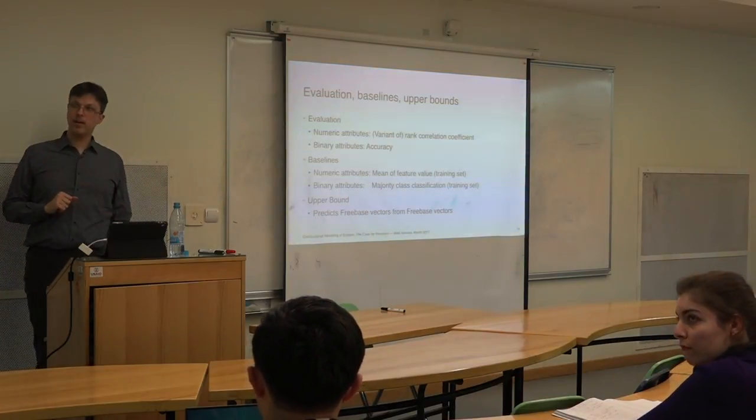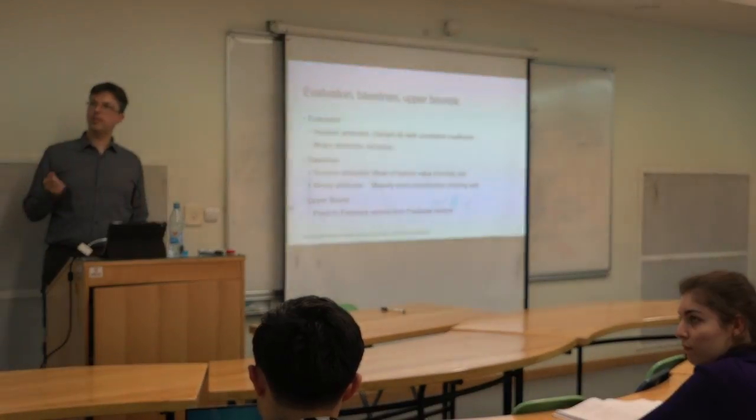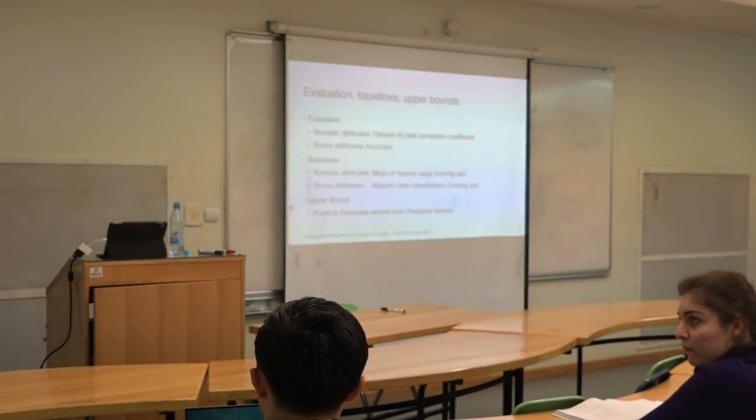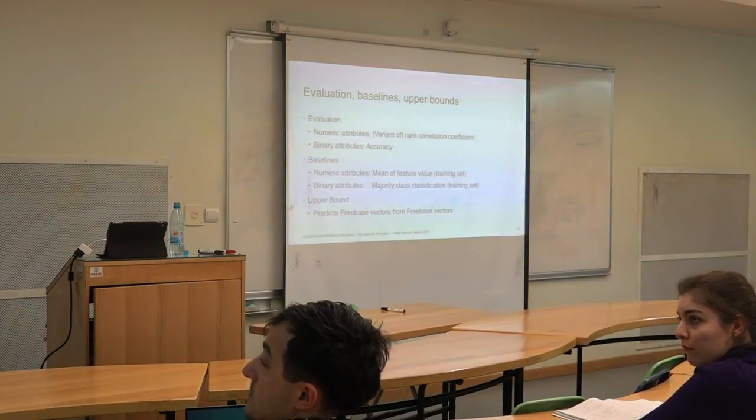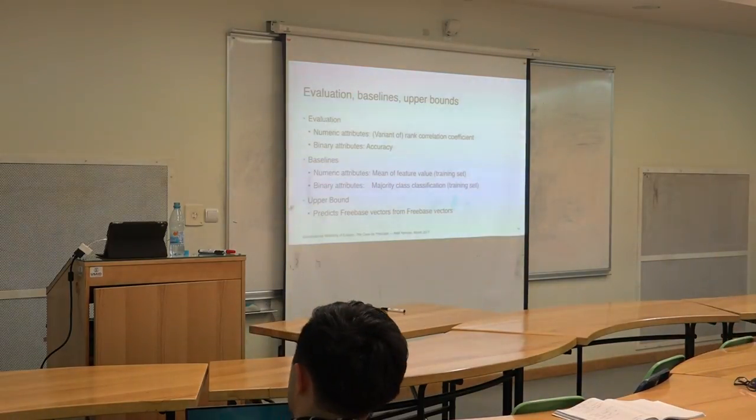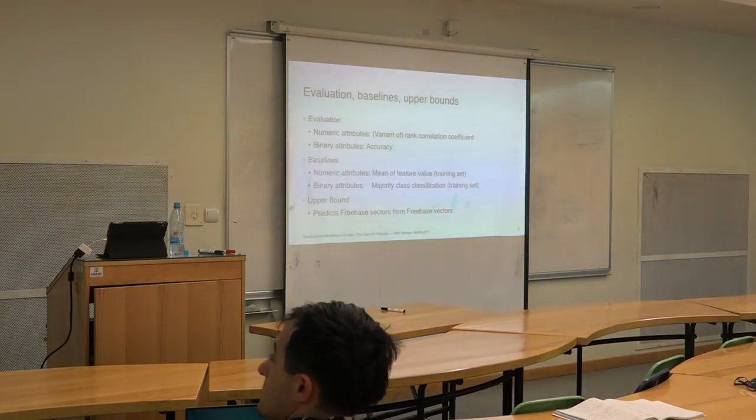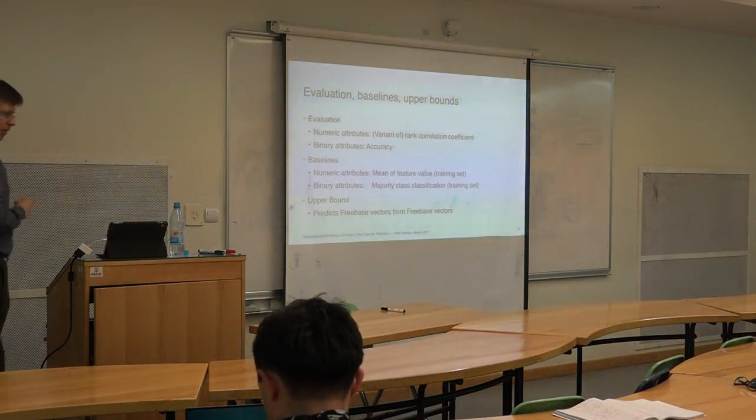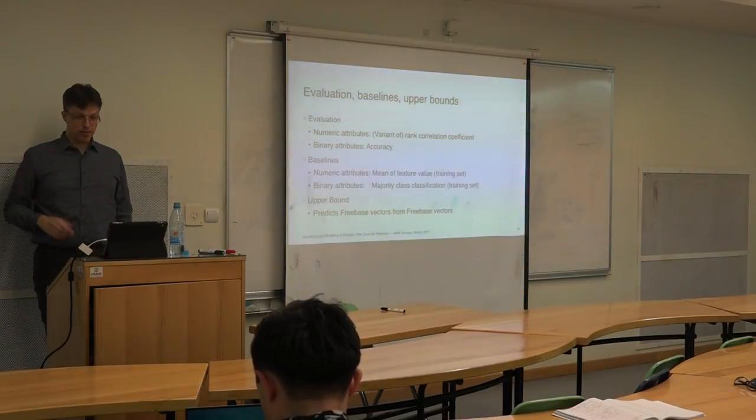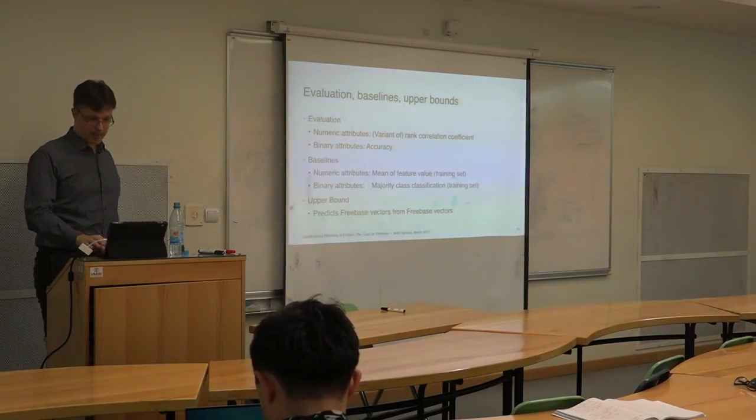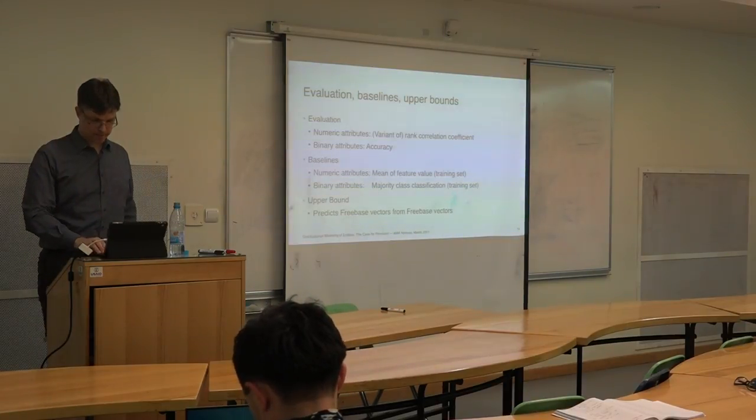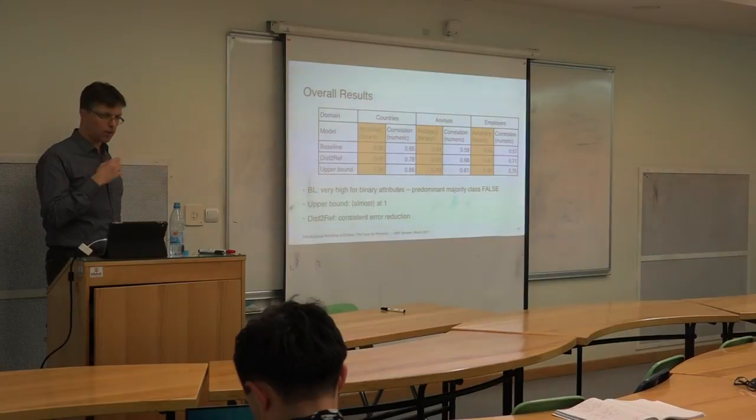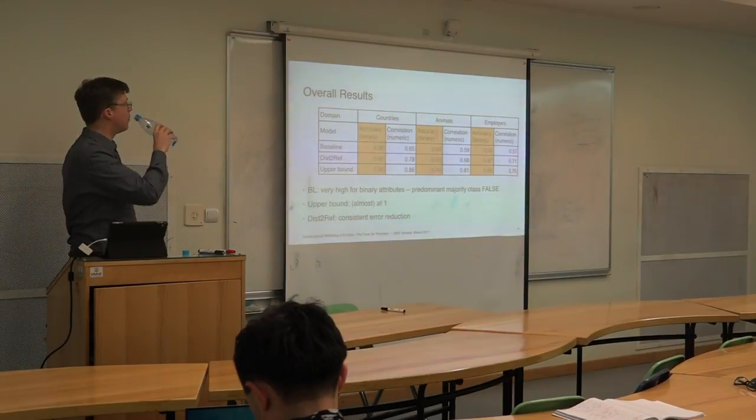And so the upper bound would be a model where you use where you essentially give it the Freebase vectors as the input. So you don't use the distributional vectors here as the input, but really the vectors from the attribute, the actual referential attribute vectors from the knowledge base. In principle the model should be able to learn the task perfectly, but as a matter of fact it doesn't do that. So here are a couple of results.